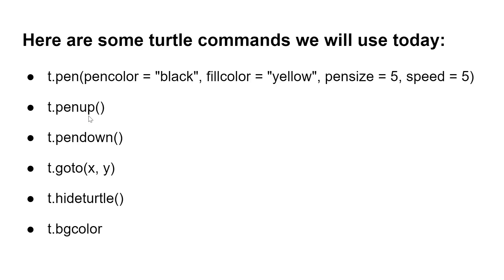There's t.penup. So t.penup will basically just lift the pen off the screen. For example, if we want to go to a specific coordinate, we have to lift our pen up and then it can go there. And then we can put our pen down with t.pendown, which puts the pen on the screen again so it will show a trail when it draws.